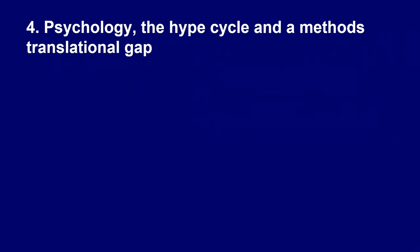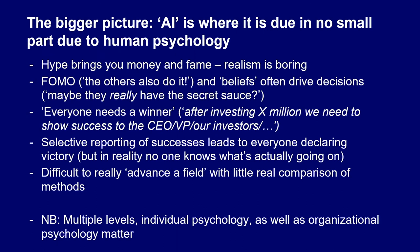There's also quite a lot of psychology, especially around new technologies. In the 1980s, high-throughput screening was the same — belief in technology and large numbers. AI is probably where it is also because of human psychology. Hype brings money and fame, and there's lots of fear of missing out — not just individually but at the company level. If Pfizer is doing something and Novartis is not, shareholders of Novartis ask if they should be doing it too.